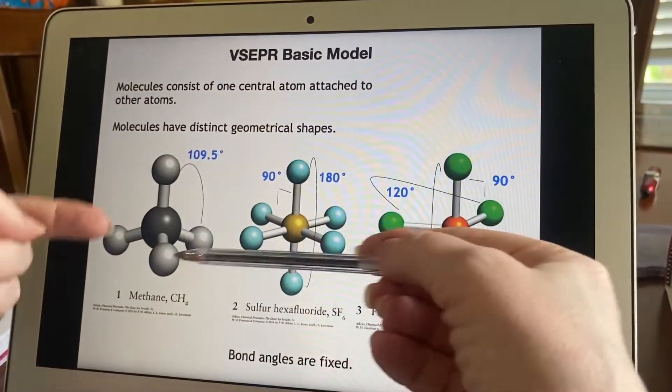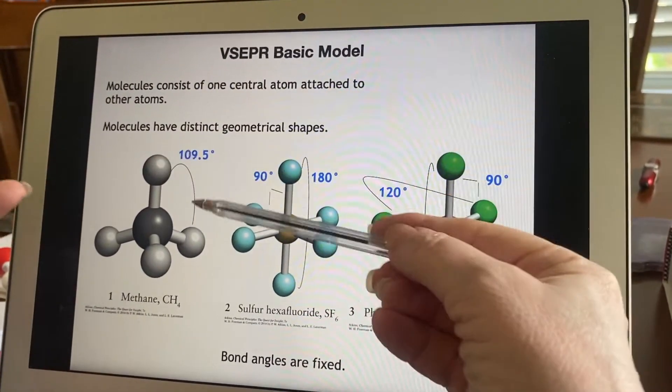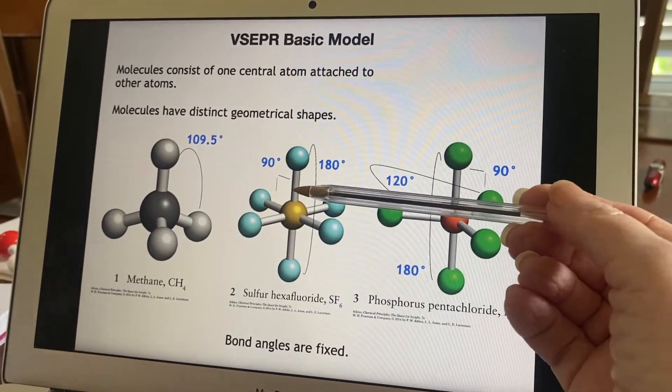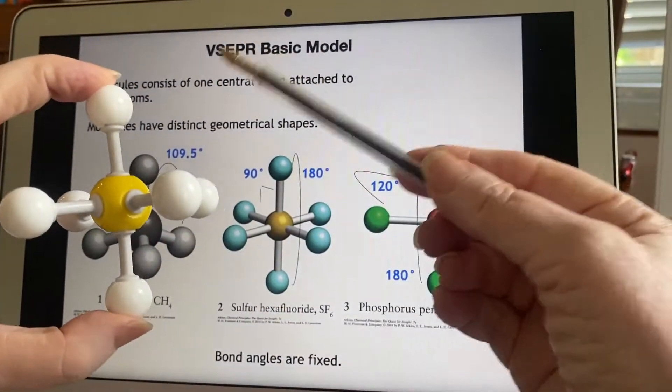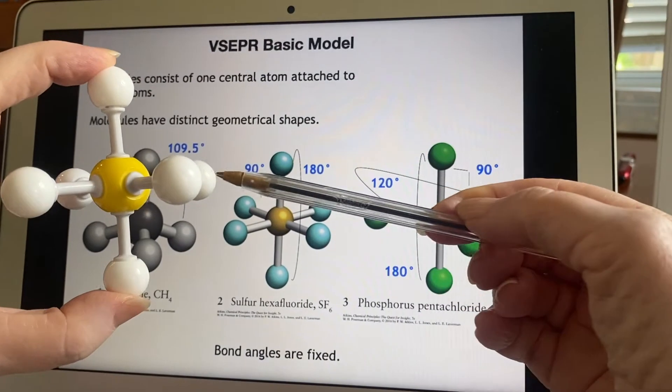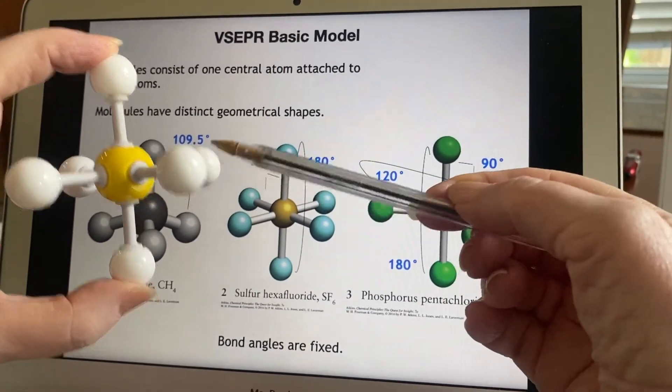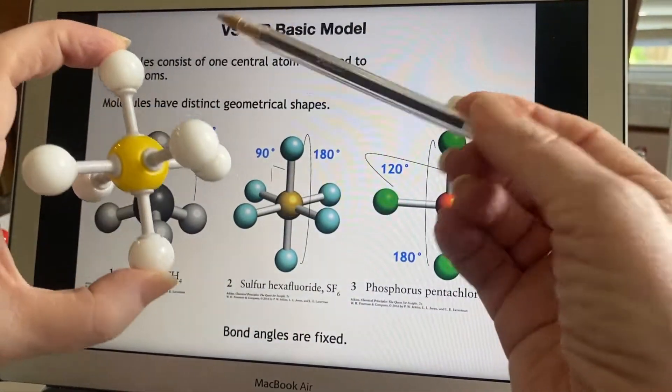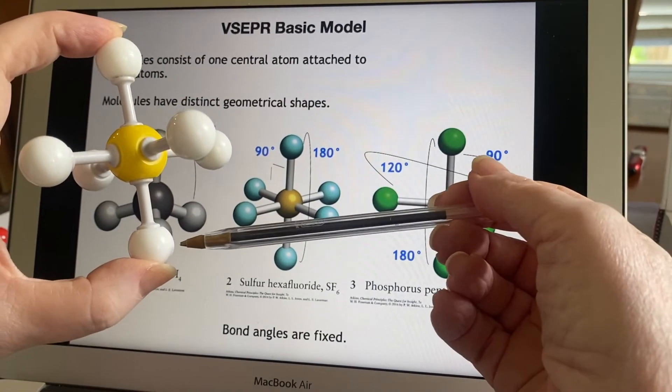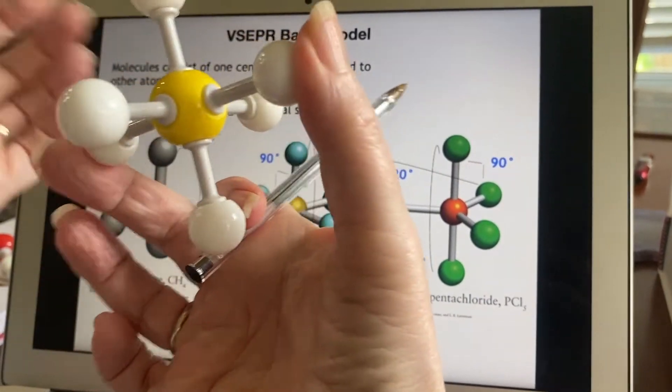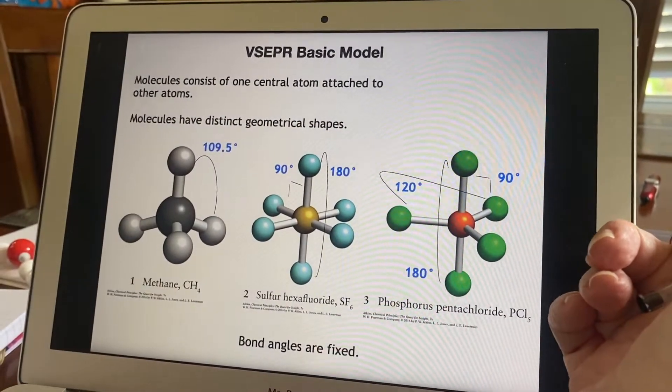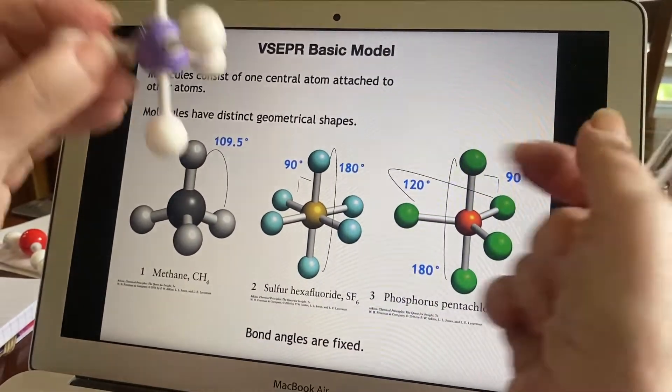In the methane, all of the angles are this 109.5 degrees. In the sulfur hexafluoride, you could look at it and say, oh, each of these is a 90-degree angle. Every one of those is a 90-degree angle. But between this one and the one opposite it, you would have 180 degrees, and you could do that this way also and that way as well, all 180 degrees.